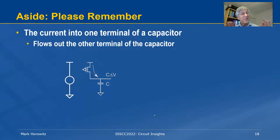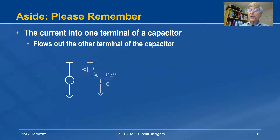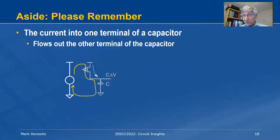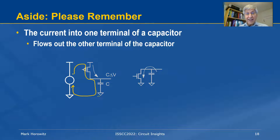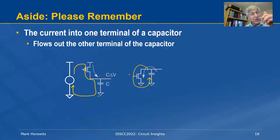Every time I make a 0-to-1-to-0 transition, I dissipate that much energy. A brief aside: when we talk about current flowing from the power supply to the capacitor, current always flows in a cycle. It flows from the power supply through the transistor into the top of the capacitor, then out of the bottom of the capacitor back to the power supply. Similarly when discharging, it's again a loop of current. Current always flows in a circle — don't ever think of current just going in one direction without a complete loop.